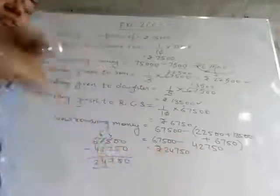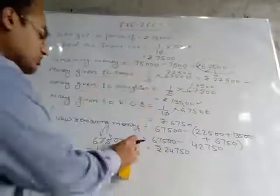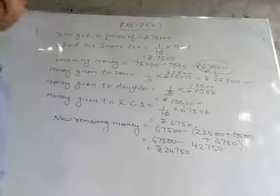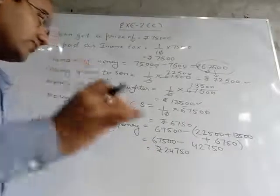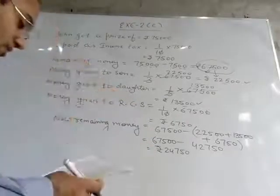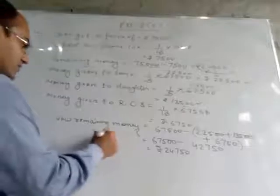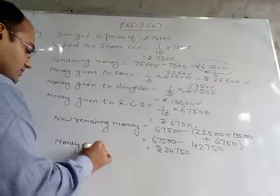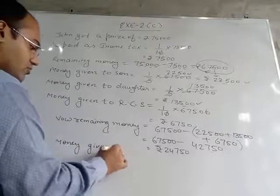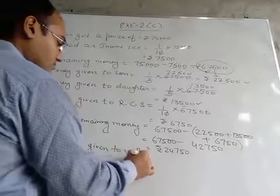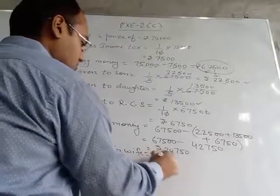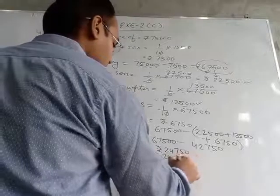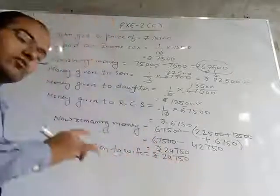This is the money left with him. In the question it is written that the remaining money he gave to his wife. So at last we write: money given to wife is 24,750 rupees. This is the answer to the first part.